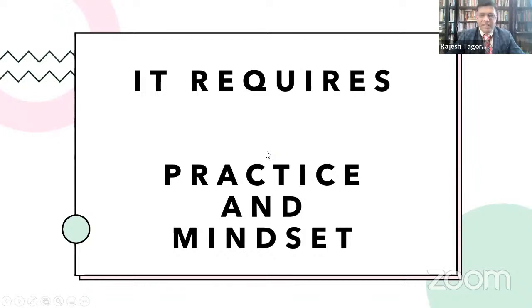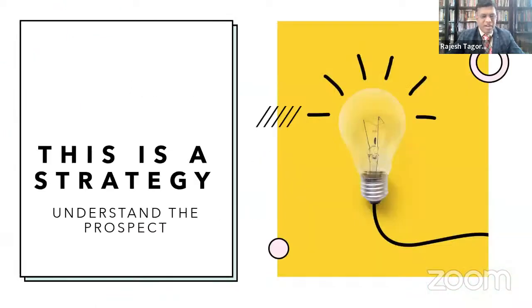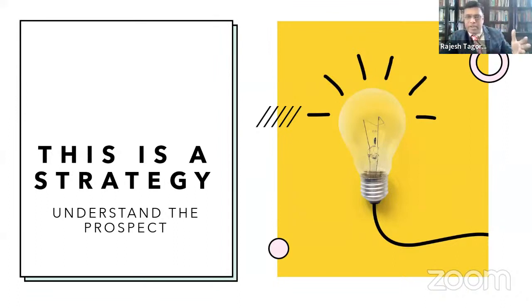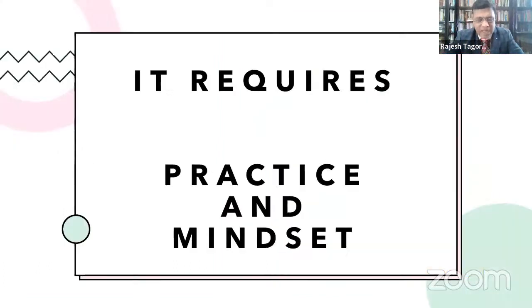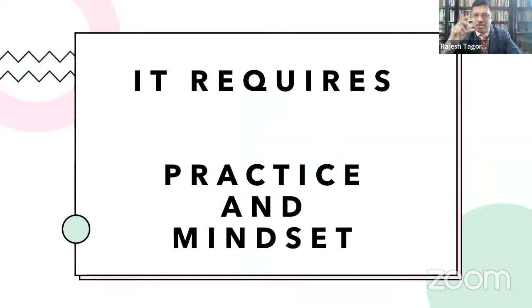The strategy is to understand the prospect first. Depending on who the prospect is, what you have got to show them is going to change. We need to spend a lot of time understanding the prospect. Understanding the prospect and presenting the Wealth Kit requires two important things: the right mindset and the right practice.